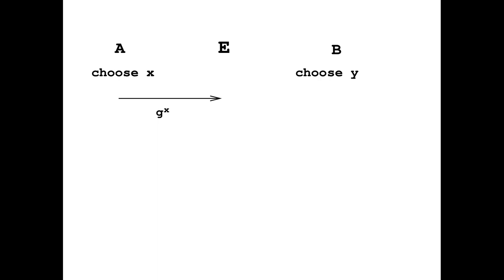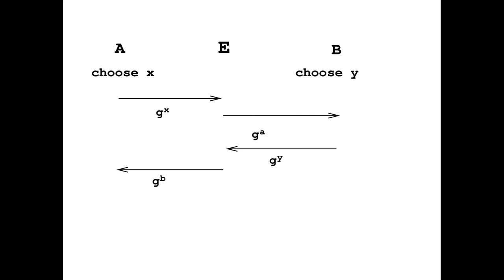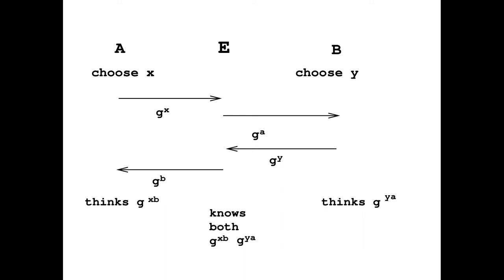Bob replies with g^y unchanged, observing g^a instead of g^x. Eve ignores g^y but sends g^b back to Alice. The result is that Alice thinks the key is g^(xb), Bob thinks it's based on g^a, and Eve can compute both g^(xb) and g^(ya). If Alice and Bob are trying to communicate, Alice will encrypt everything with a key known to Eve. Eve decrypts that, re-encrypts it with the key known to Bob, and forwards it to Bob. Alice and Bob won't ever even know this is happening — all messages are being decrypted and re-encrypted transparently as they pass through the network.